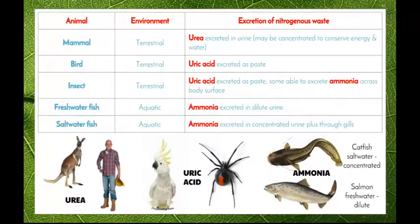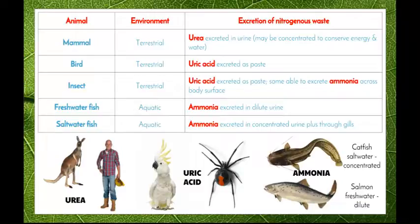Looking at the different types of nitrogenous waste and the organisms that excrete them: mammals such as kangaroos and humans, which live in terrestrial environments, excrete urea in urine. Our urine can have high or low levels of urea depending on feedback from other parts of our body. If we're hydrated, our urine will have more water and be a more diluted solution. If we're dehydrated, our urine will be very concentrated with urea, have that dark yellowy-brown colour, and a strong smell.